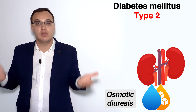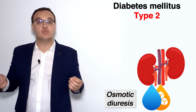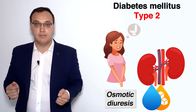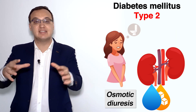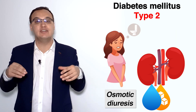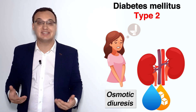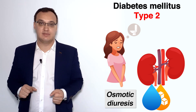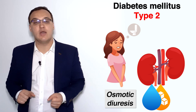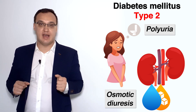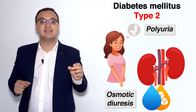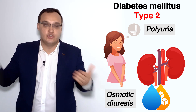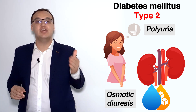Logically, the patient will urinate a lot because we increase the water flow into the urine, meaning the patient feels the need to urinate frequently. We call this polyuria. Poly means a lot, and urea means urine. So we have polyuria.